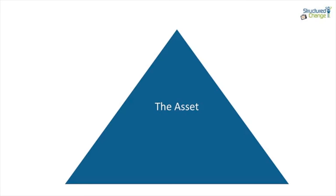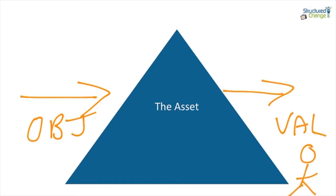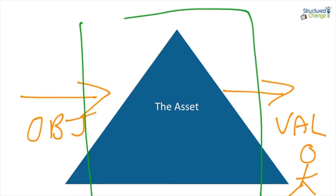We've got an asset — the triangle here representing the asset — and what will happen is we will have demand placed on that asset through objectives on one side, and then at the other side we wish to return value to stakeholders. Sitting around the asset and accommodating both the demand and objectives through to the delivery of value is, of course, the asset management system.